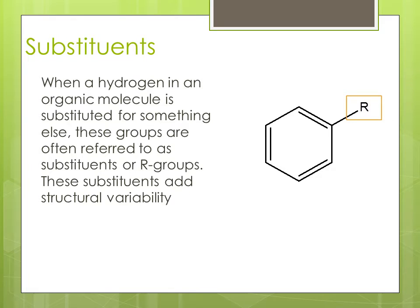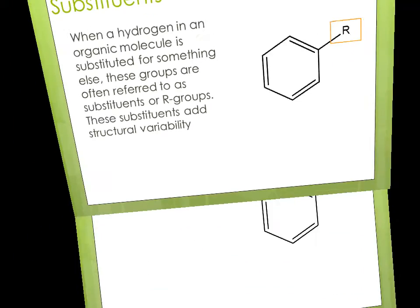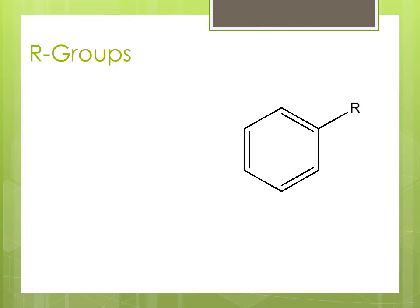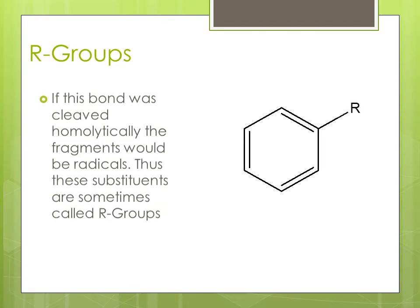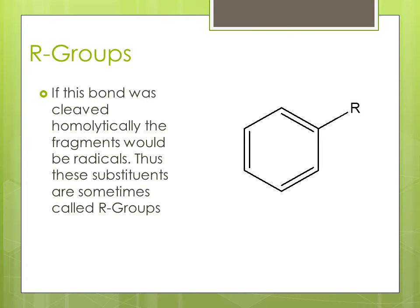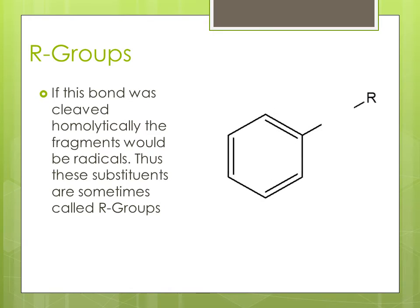These substituents add structural variability. If this bond was cleaved homolytically, the remaining fragments would be considered radicals. Thus, these substituents are sometimes referred to as R-groups.